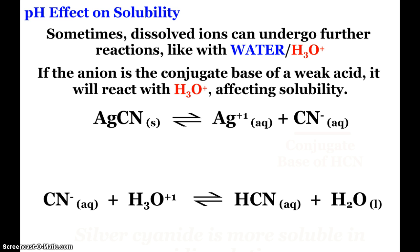But the first part is looking at the effect of pH on solubility. We know that some of our ionic compounds, some of our salts, create acidic and basic solutions depending on what type of ions they're made of. But we can see here that sometimes our dissolved ions can undergo further reactions like with water that we saw in the hydrolysis reactions or with hydronium for acids.